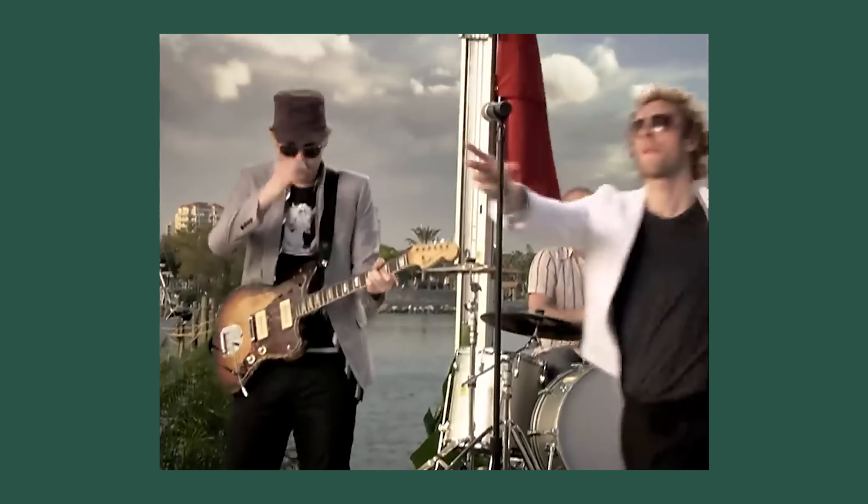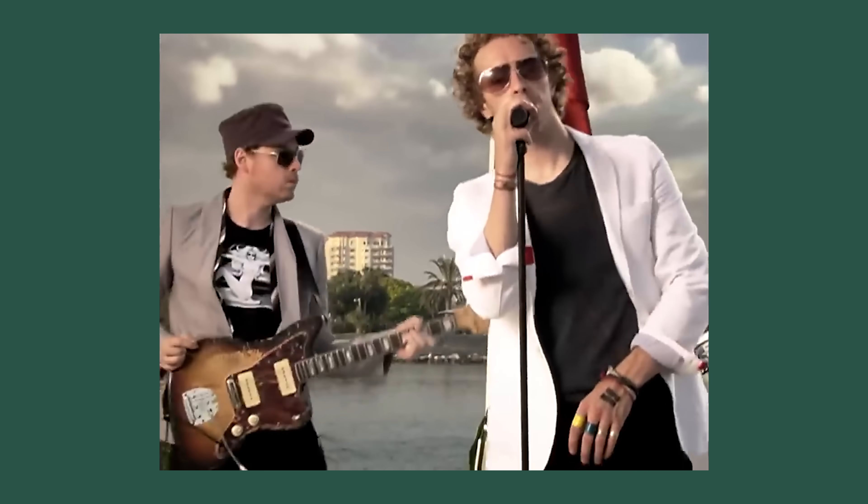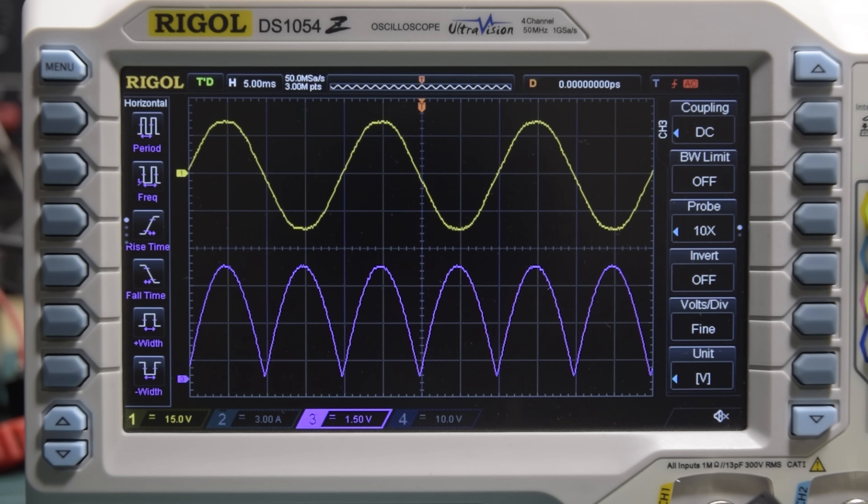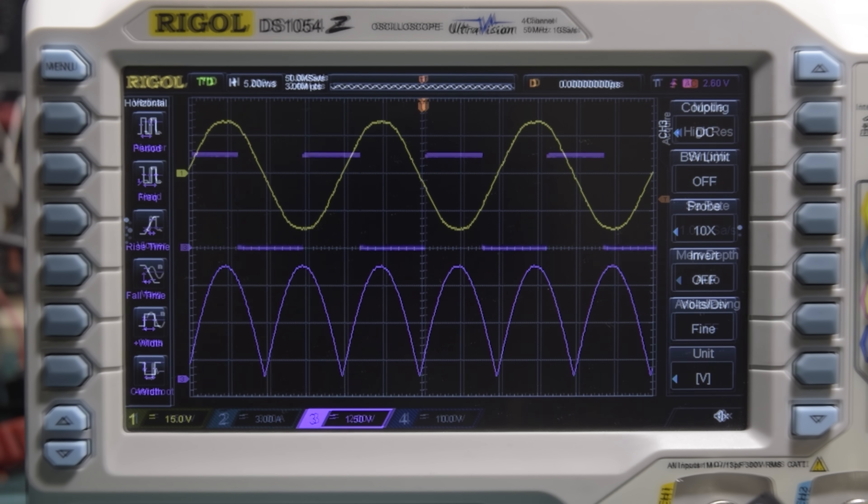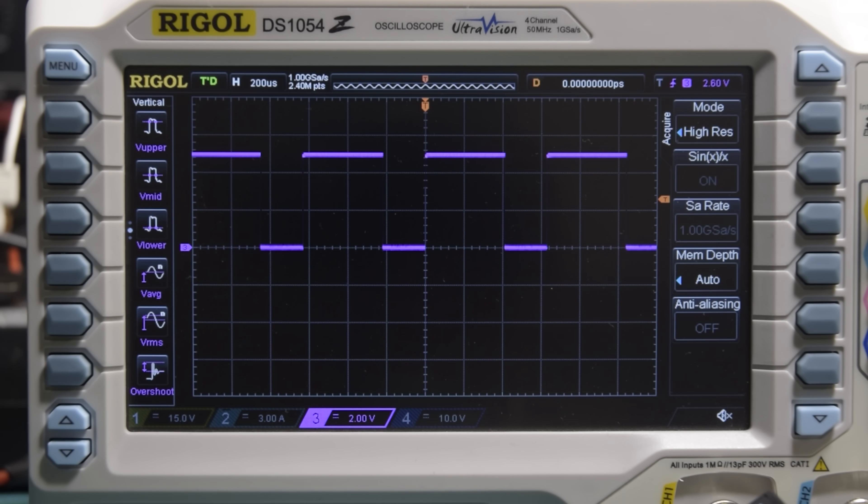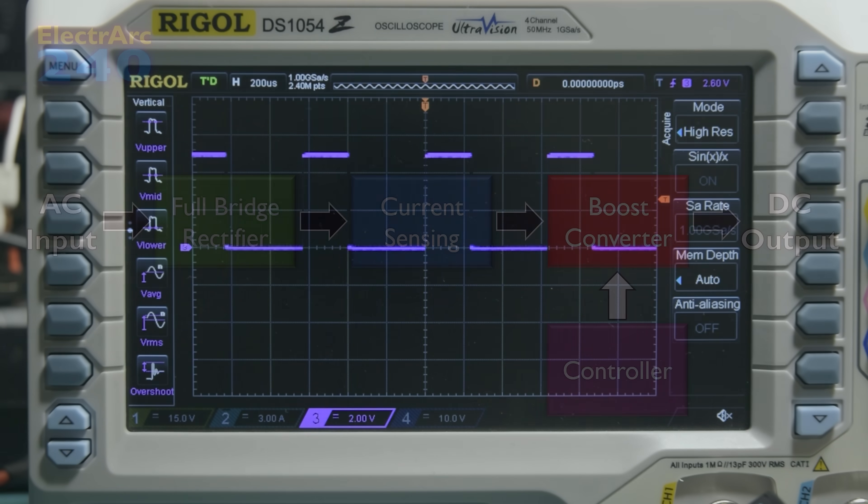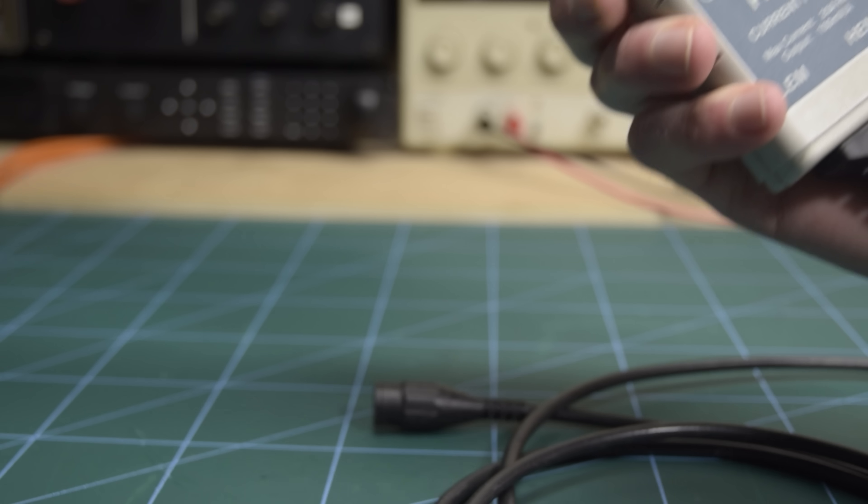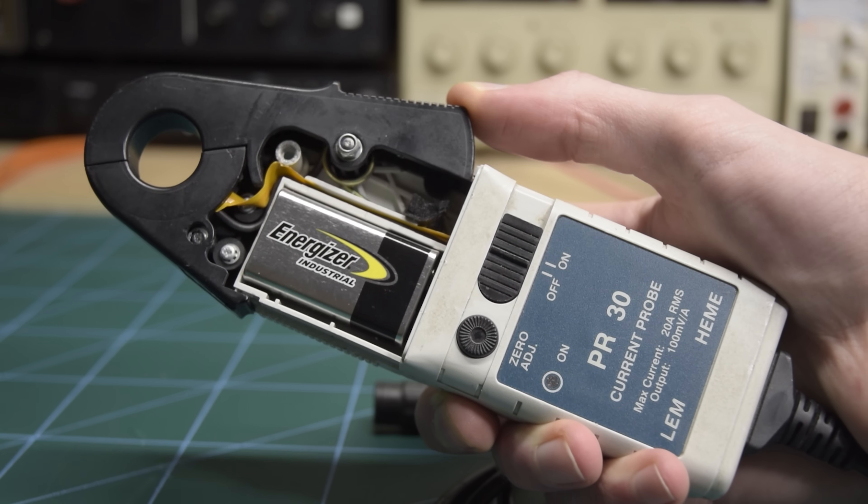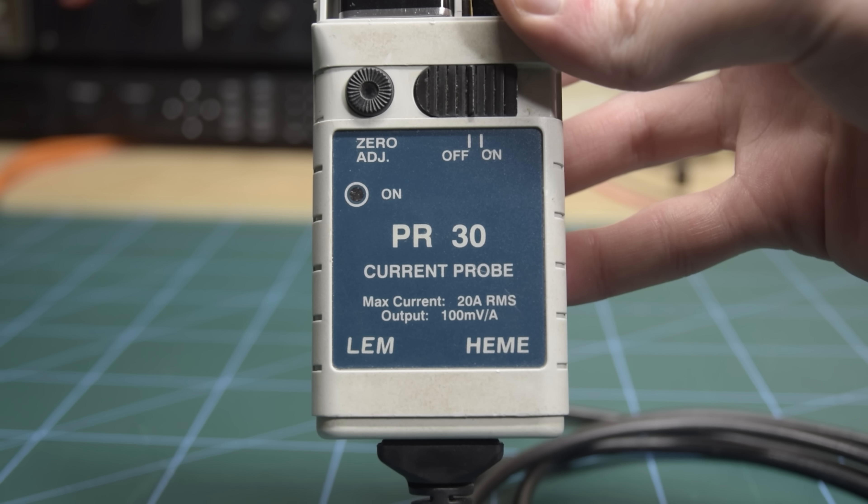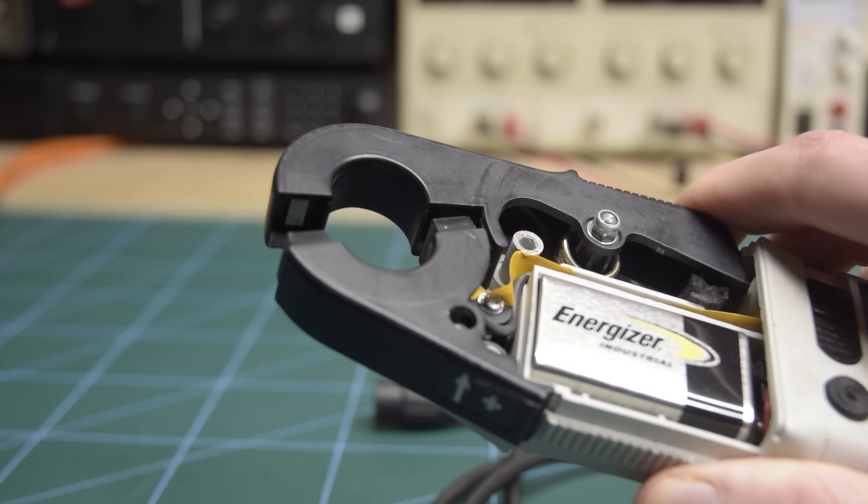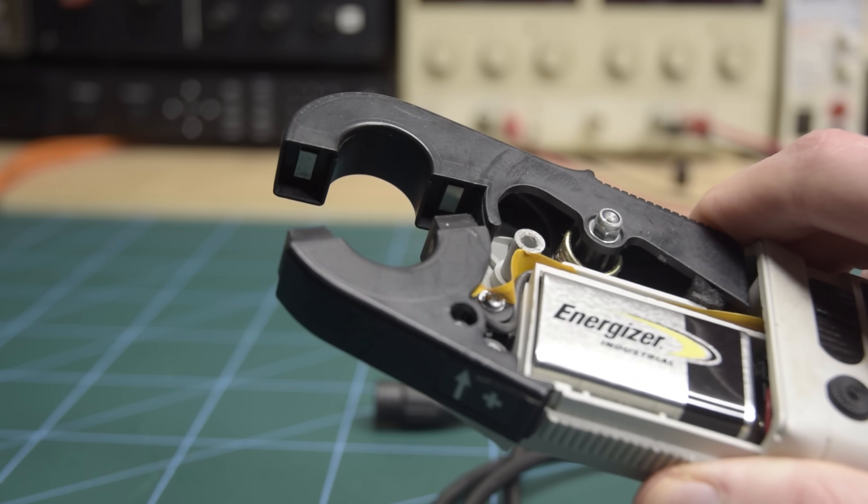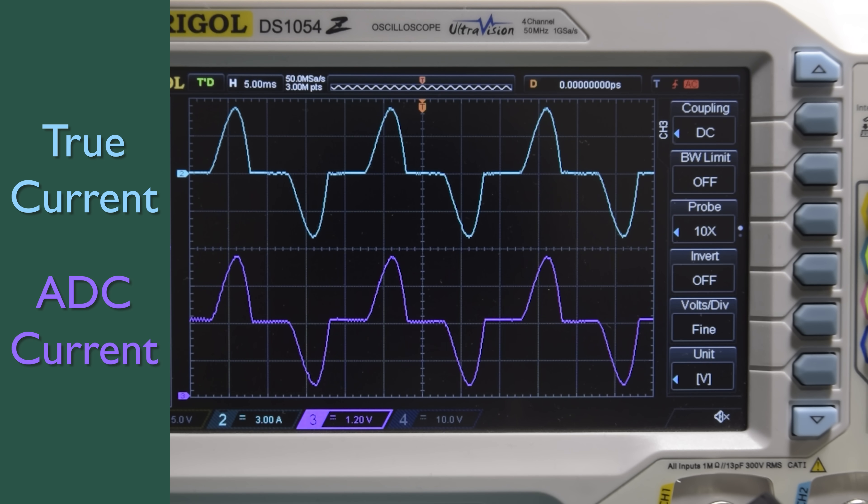Finally, we have the hardest part. Getting our boost converter to draw that current from the rectifier. To control the current drawn by the boost converter, we need to vary the duty cycle at which we switch its MOSFET, and to have any hope of getting the correct current, we'll need some form of feedback, which means we have to find a way to measure the current. For this, I'm using a Hall Effect current probe, which detects the magnetic field around a wire, and outputs a voltage proportional to the current. This is what I've been using to show current waveforms throughout the video.